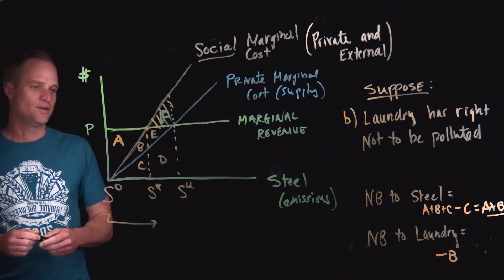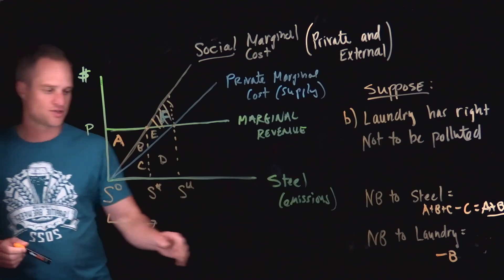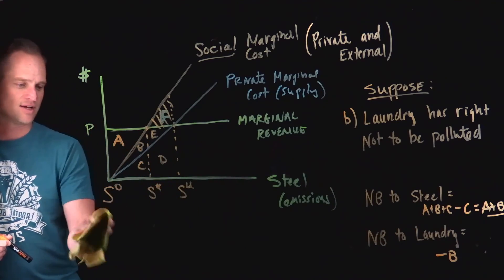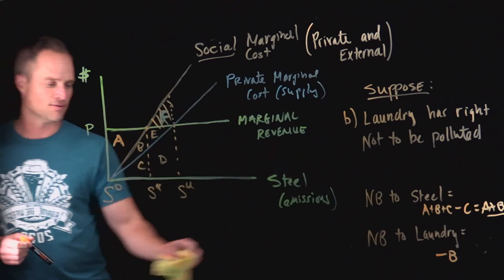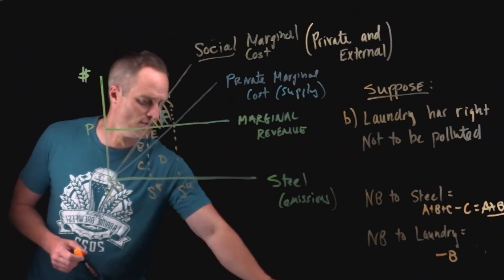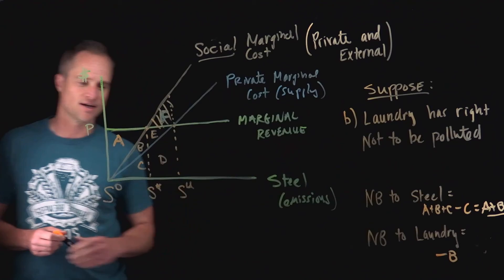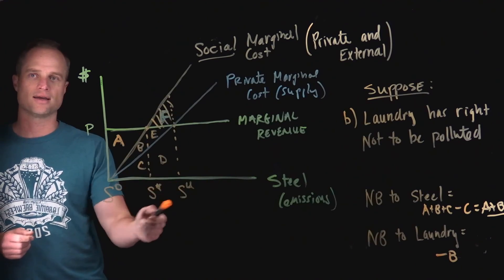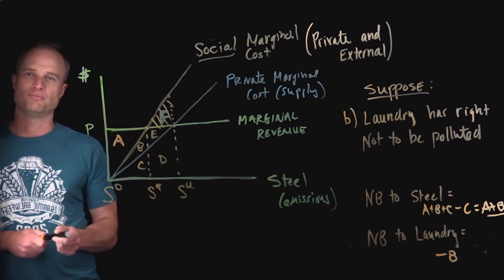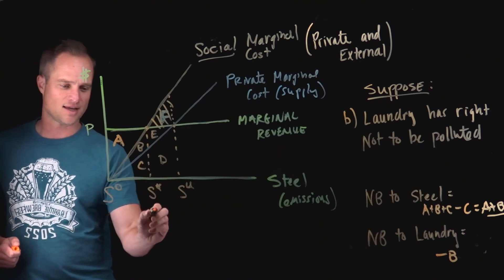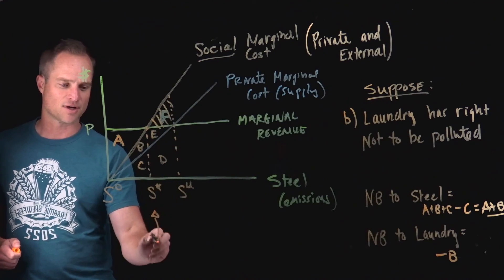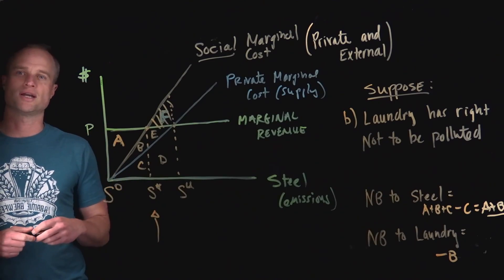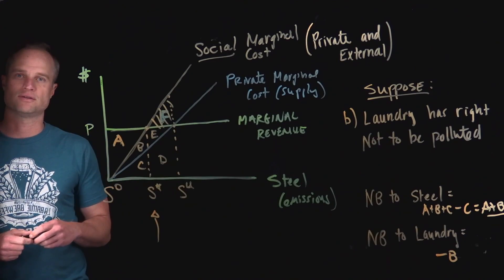In short, what the Coase theorem tells us — given the caveats are satisfied — is that it doesn't matter who has the property rights. In both cases, through bargaining and negotiation, you end up at the efficient outcome.